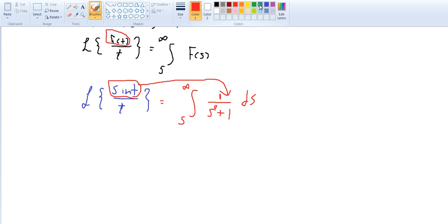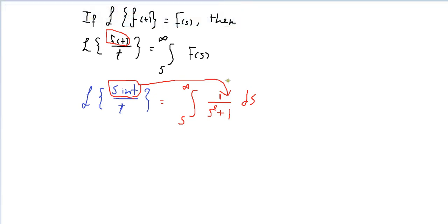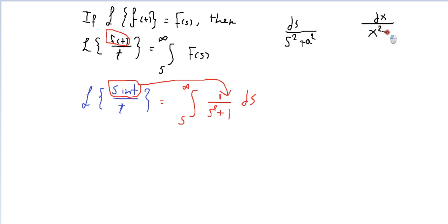In trigonometry, if we have dS over S² plus 1, this is the form of arctan. If you have dx over x² plus a², that refers to arctan of the original function. So this integral equals arctan(S).